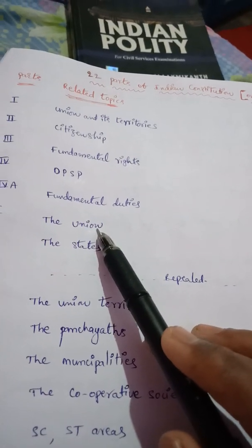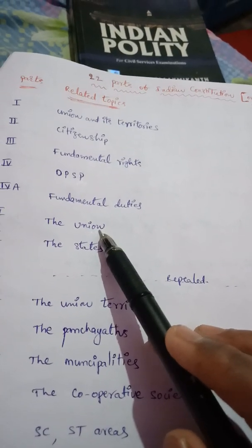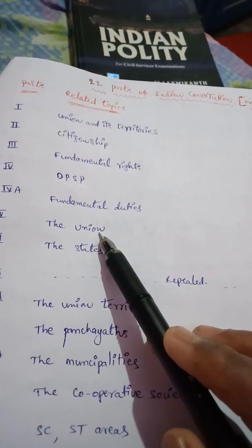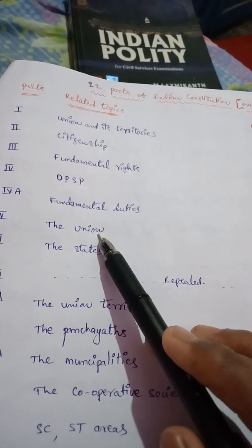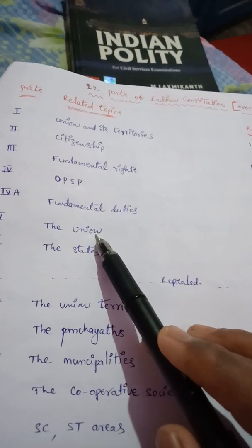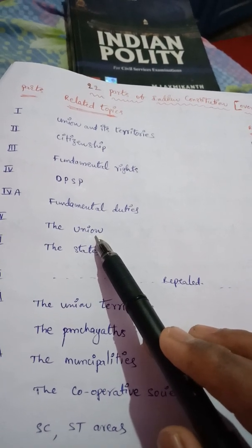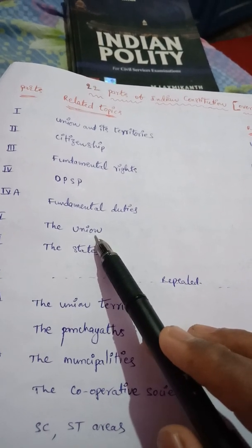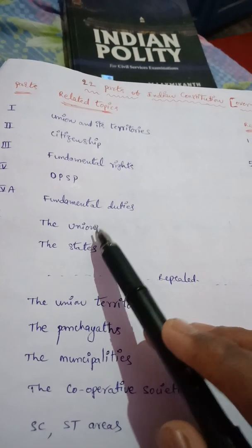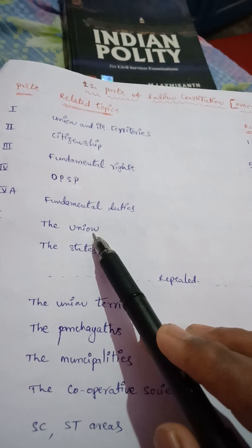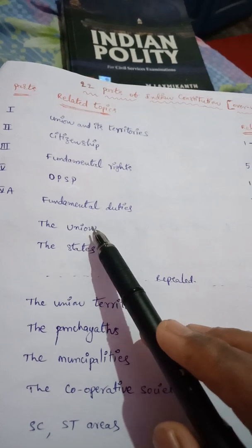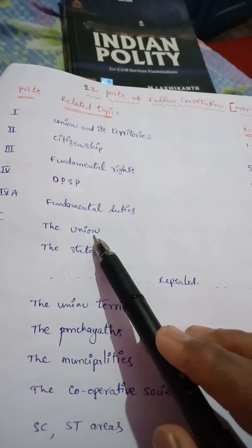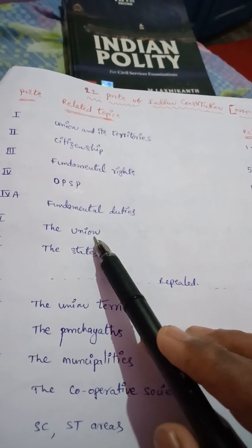Next, conferment on the Supreme Court of powers to issue certain writs — that is, habeas corpus, mandamus, prohibition, quo warranto, certiorari, etc. Next, transfer of certain cases.